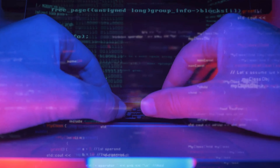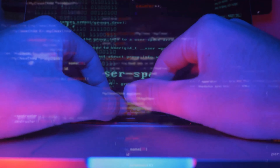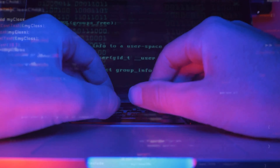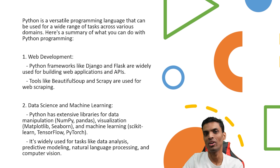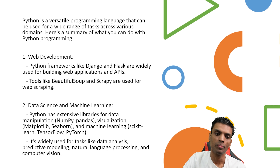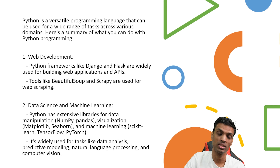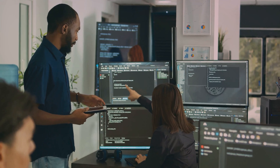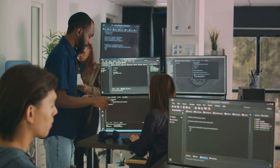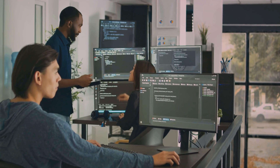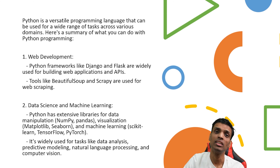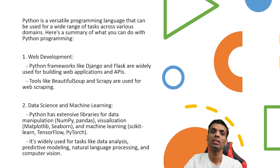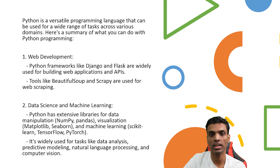Choosing the right programming language is really important before choosing the architecture of the project you're working on, because the end product can vary based on the programming language you choose. The first use case is web development. Python frameworks like Django and Flask are widely used for building web applications and APIs, and tools like BeautifulSoup and Scrapy are used for scraping websites to get data.